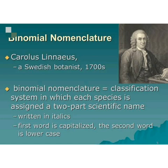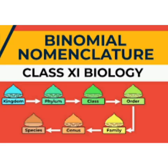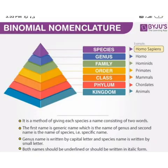The name of the genus begins with a capital letter, and the name of the species will be in small letters. When in printed form, it must be in italic style. If handwritten, the genus and species must be underlined separately.